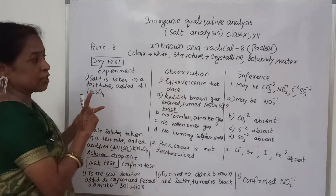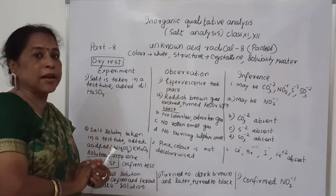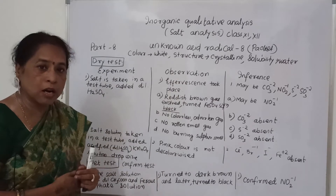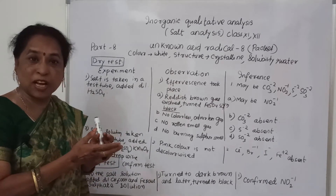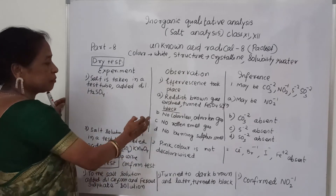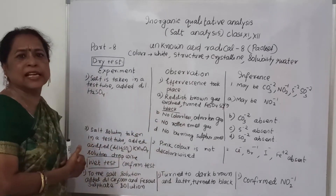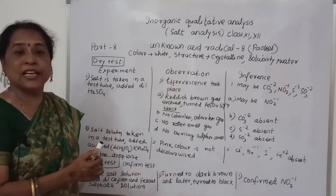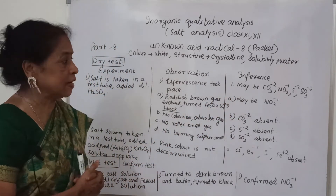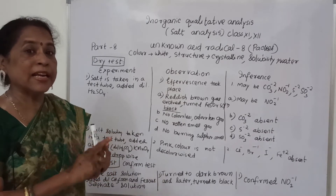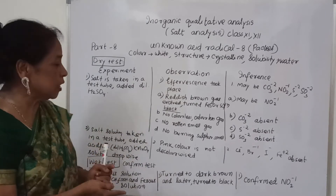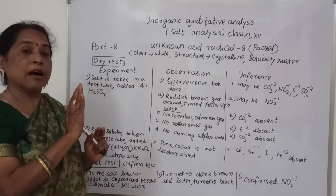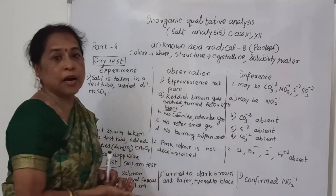The other radicals — carbonate, sulfide, and sulfite — may or may not be present. There is no colorless, odorless gas evolved, so carbonate is absent. There is no rotten egg smell gas, so sulfide is absent.